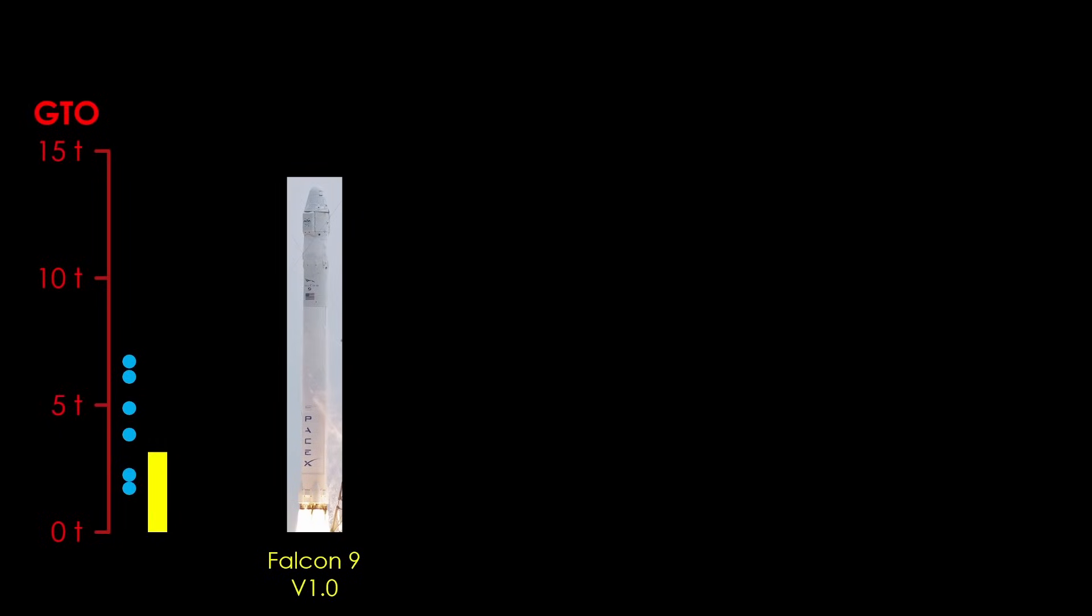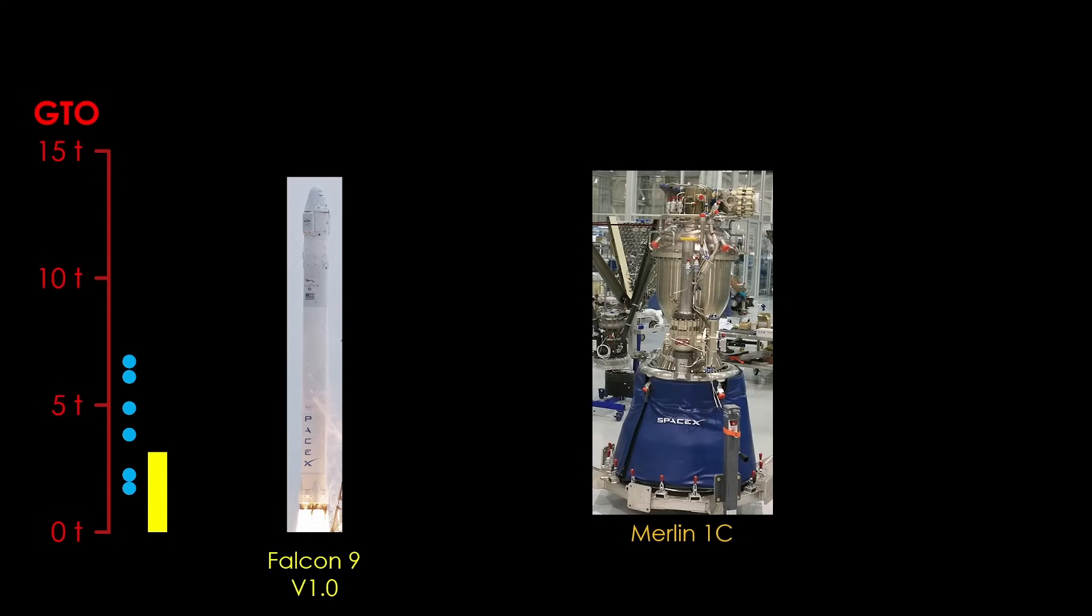Falcon 9 version 1.0 used the Merlin 1C engine, a version that first flew on Falcon 1. SpaceX used it because it was the quickest way to get Falcon 9 up and flying, and they needed to start flying cargo flights as soon as possible. The Merlin 1C was moderate in terms of efficiency, but it was nice and light, with a thrust to weight ratio about 90, more than pretty much any engine burning RP1 kerosene and liquid oxygen. It generated 420 kilonewtons of thrust, or about 43 tons.